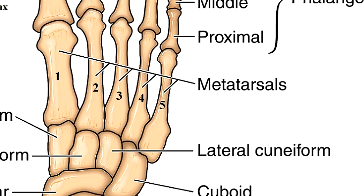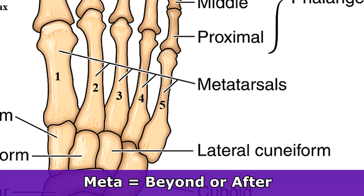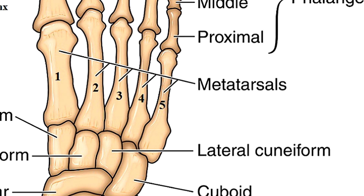Now let's talk about the metatarsus, which consists of the five metatarsal bones. The prefix 'meta' means beyond or after — these bones are beyond the tarsals. They are numbered one through five: metatarsal one is on the side of your big toe, and metatarsal five is on the side of your pinky toe. People sometimes confuse the carpals and metacarpals of the hand with the tarsals and metatarsals of the foot — just remember the carpals help you steer your car, and the tarsals are near your toes.